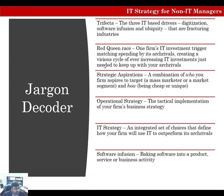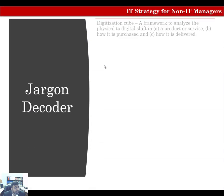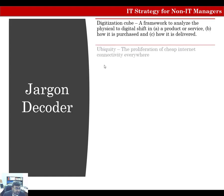The first trifecta component we talked about was software infusion, which is basically baking software into a product, service, or business activity. More and more items have software in them, and this is getting more pervasive. We're going to talk about digitization and analyze the shift from physical to digital using the digitization cube. The shift can happen in a product or service, or how it's purchased, or how it's delivered. And ubiquity is the proliferation of cheap internet connectivity everywhere.